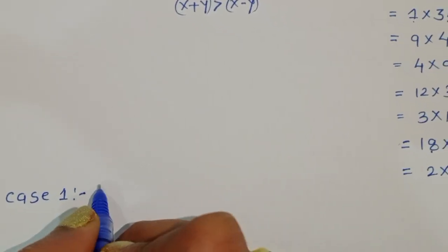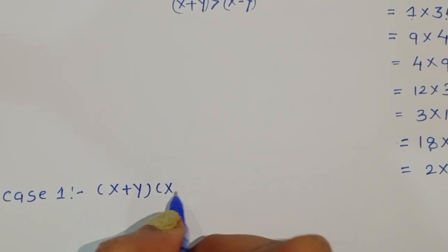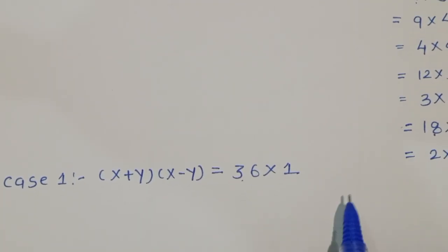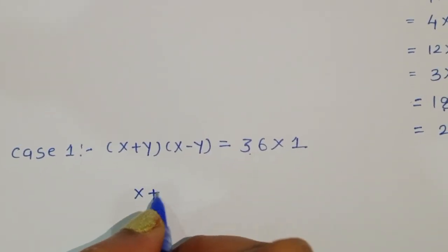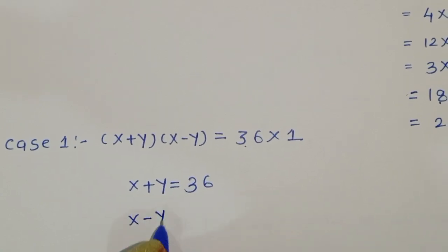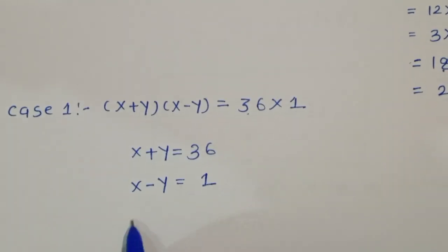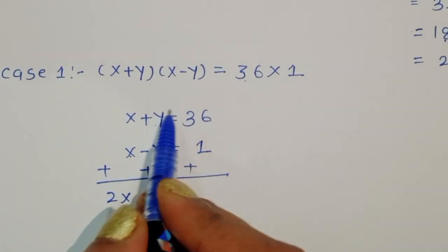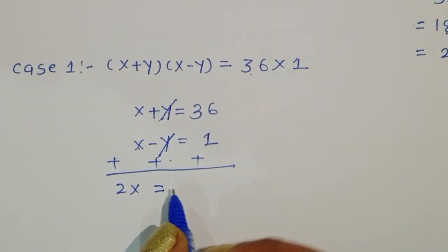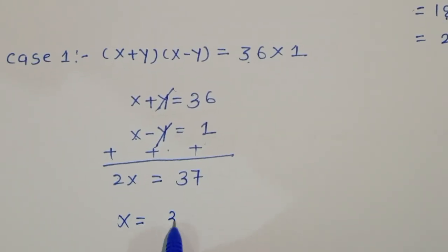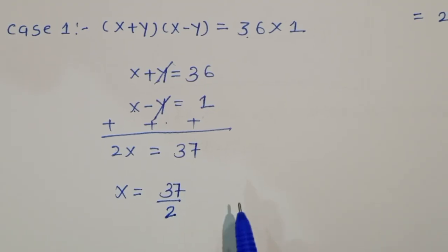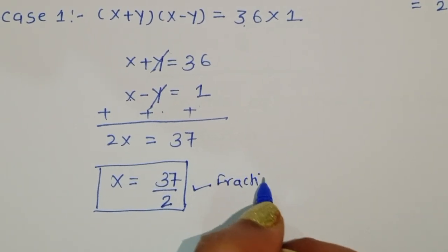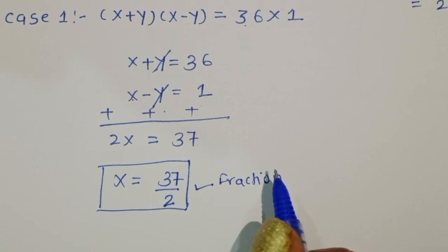Case 1: (x + y)(x - y) = 36×1. So x + y = 36 and x - y = 1. Adding these two equations: 2x = 37, so x = 37/2. This is a fraction, not a natural number, so this case is rejected.